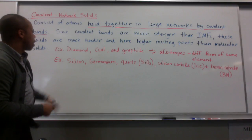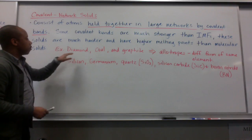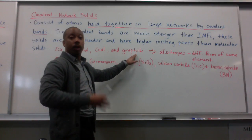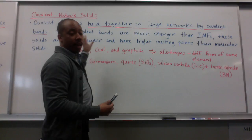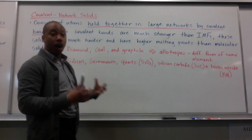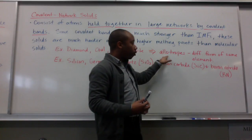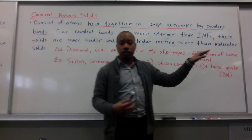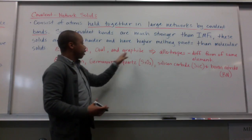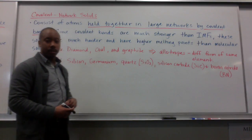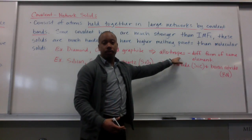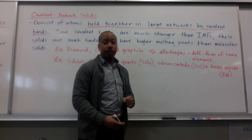Much higher melting points. Some examples are diamond, coal, and graphite — these are big examples of covalent network solids, and they're all made from carbon. They're all different forms of the same element — carbon stacked in different ways to give us different substances. These are called allotropes: different forms of the same element.